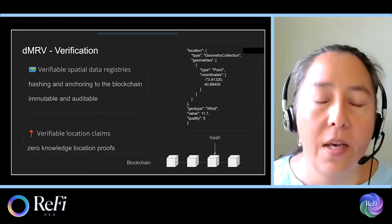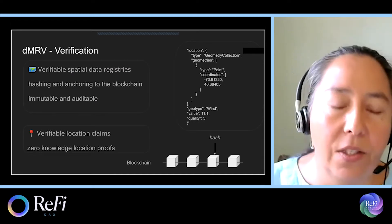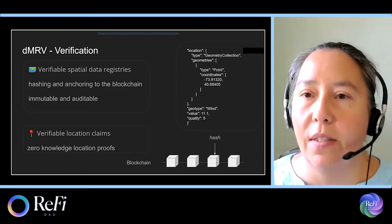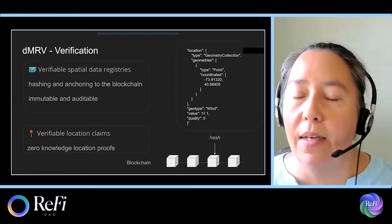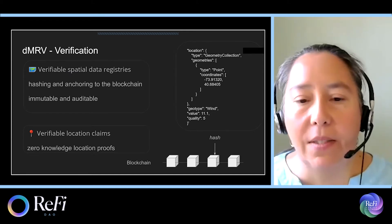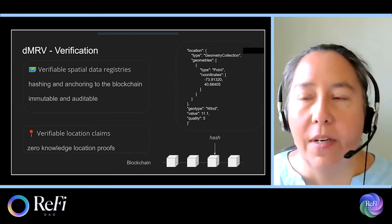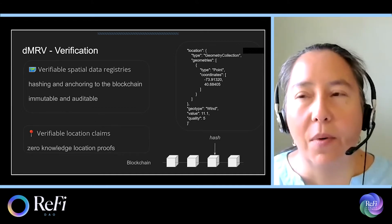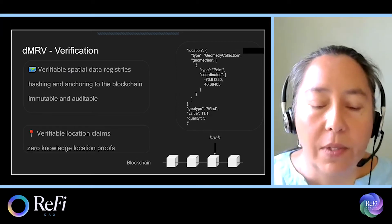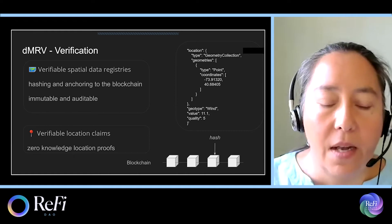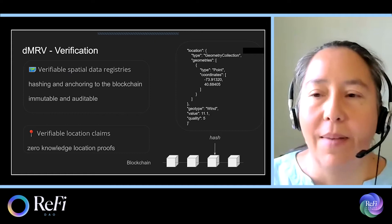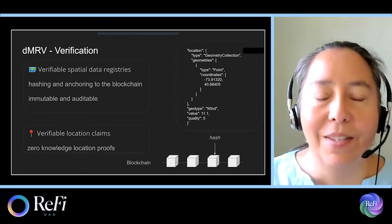For verification, we use the registries with hashing and anchoring to the blockchain. On the right, you'll see a GeoJSON representation of some data from an MRV provider, which then gets hashed and placed onto the blockchain, very similar to what Regen Network was talking about for their data module. This allows an immutable and auditable understanding of whether the data has been edited or changed.